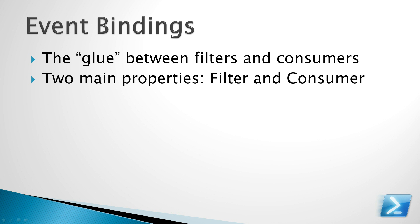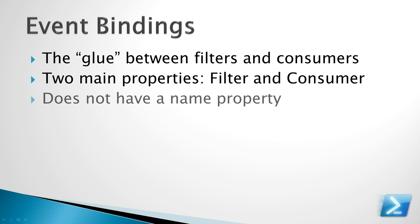The Event Bindings have two primary properties: the filter and the consumer. Each of these properties contains a reference to the filter and the consumer that you would like to bind together. Unlike Event Filters and Event Consumers in WMI, the Event Bindings do not have a name property, which means that managing these bindings in the future will be a little bit more tricky.